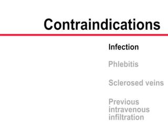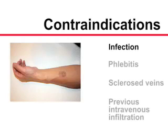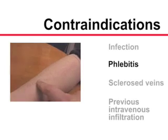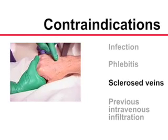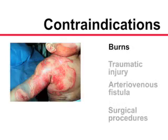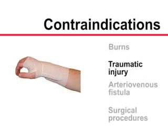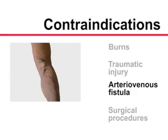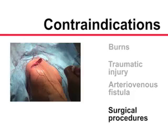Relative contraindications to inserting a peripheral catheter in a specific site may include infection, phlebitis, sclerosed veins, previous intravenous infiltration, burns or traumatic injury proximal to the insertion site, arteriovenous fistula in an extremity, and surgical procedures affecting an extremity.